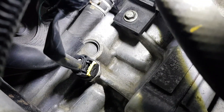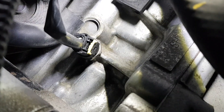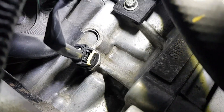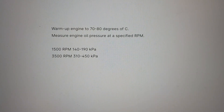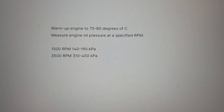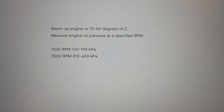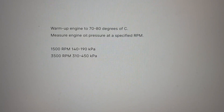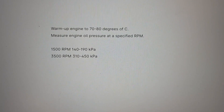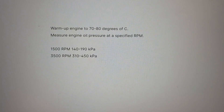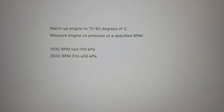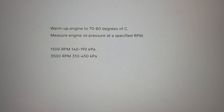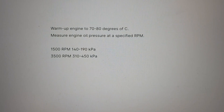We should take the oil pressure at a temperature of 70 to 80 degrees Celsius. At 1,500 RPM it should indicate 140 to 190 kilopascals. Next, check it at higher RPM — 3,500 RPM — where it should be between 310 and 450 kilopascals.